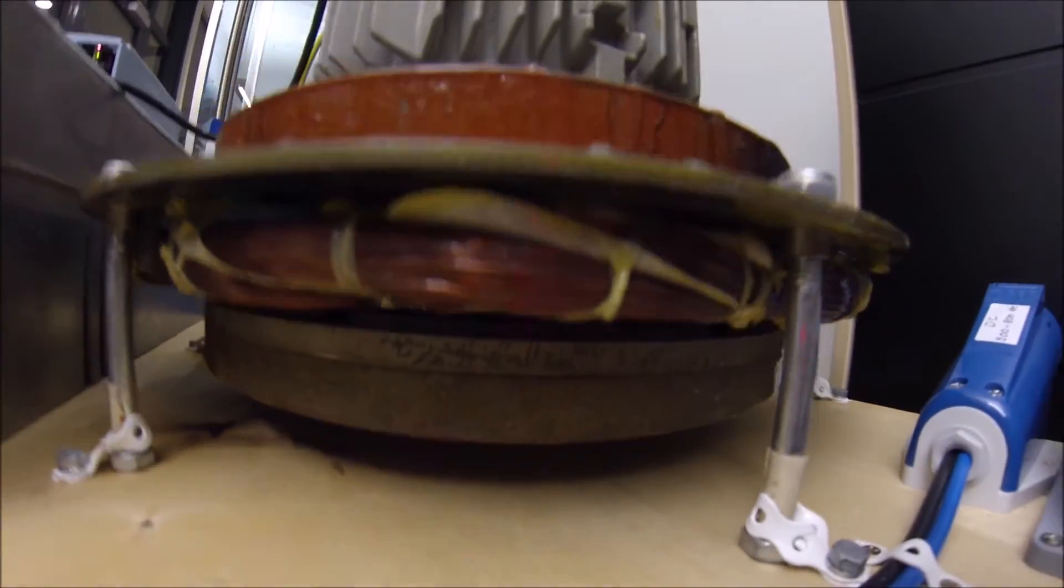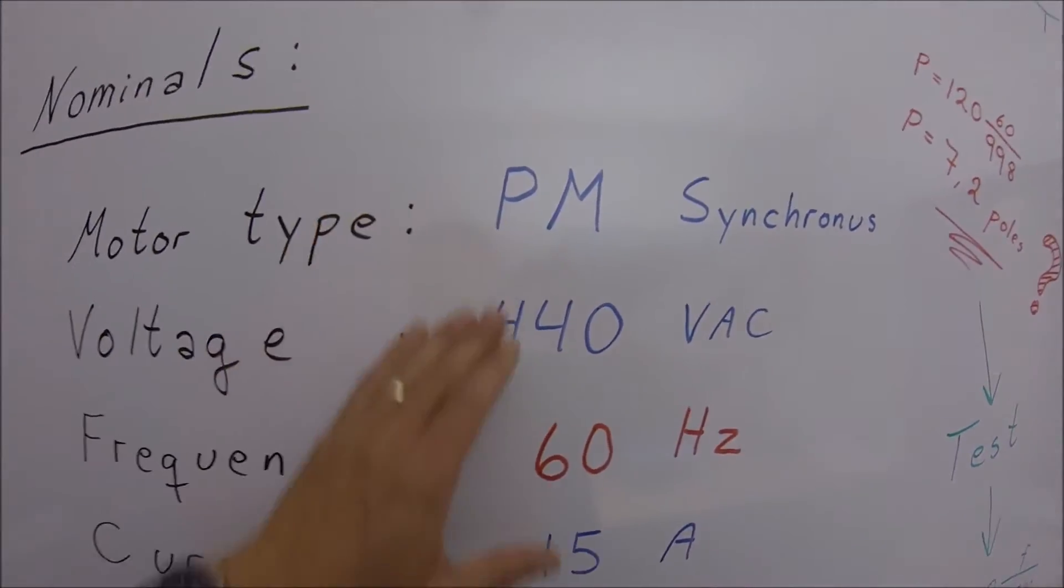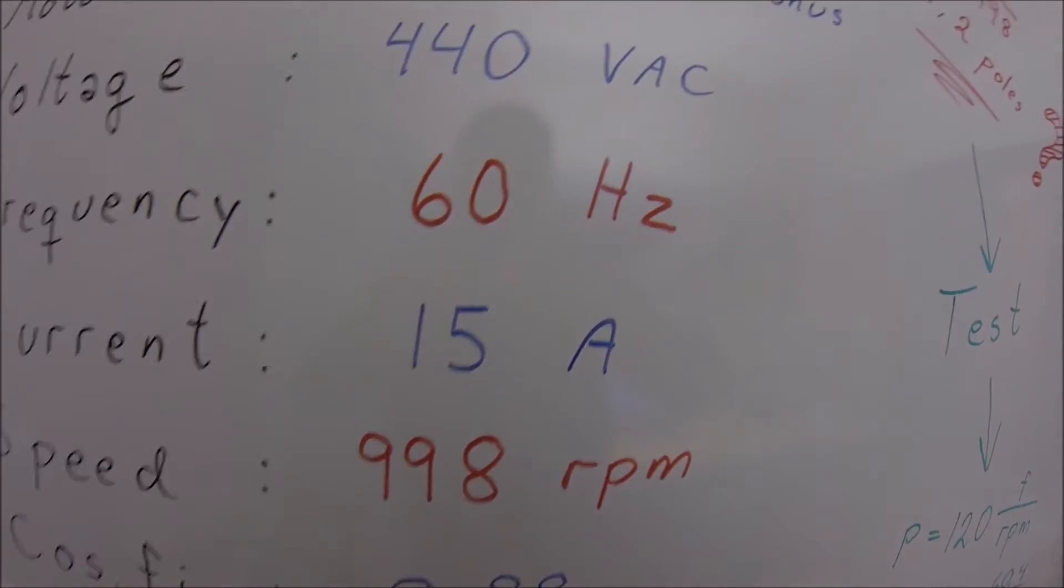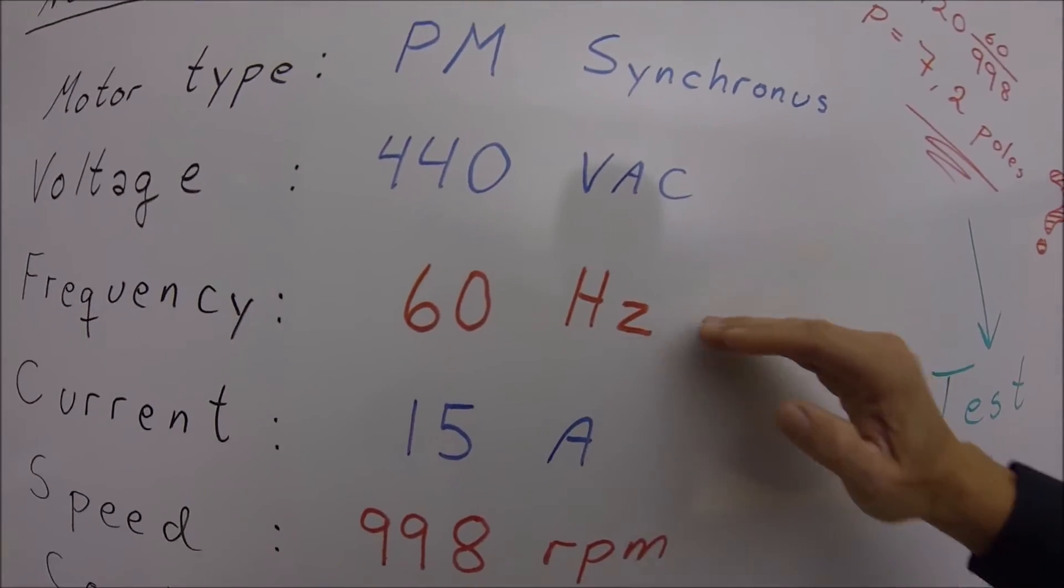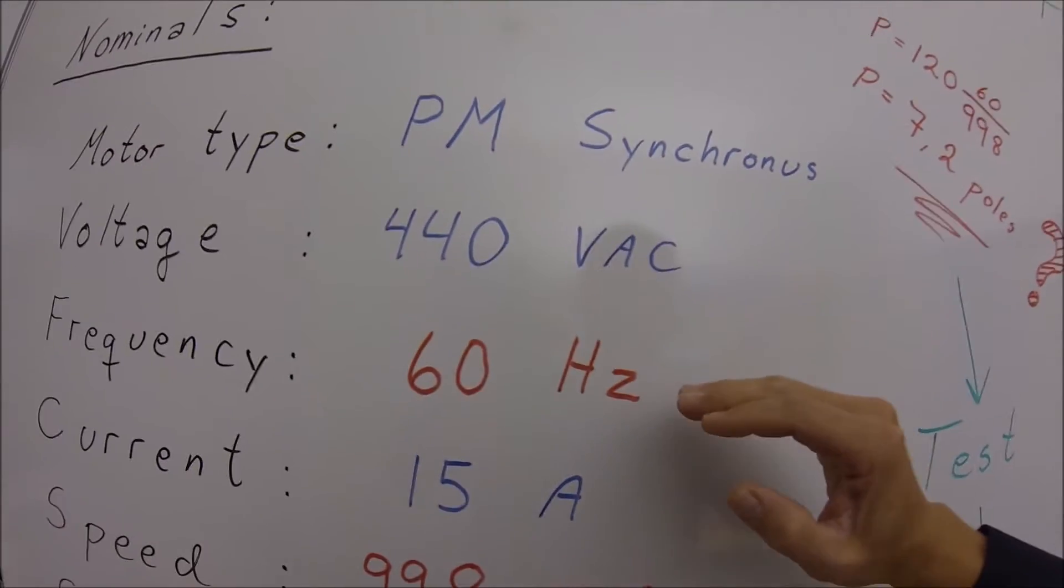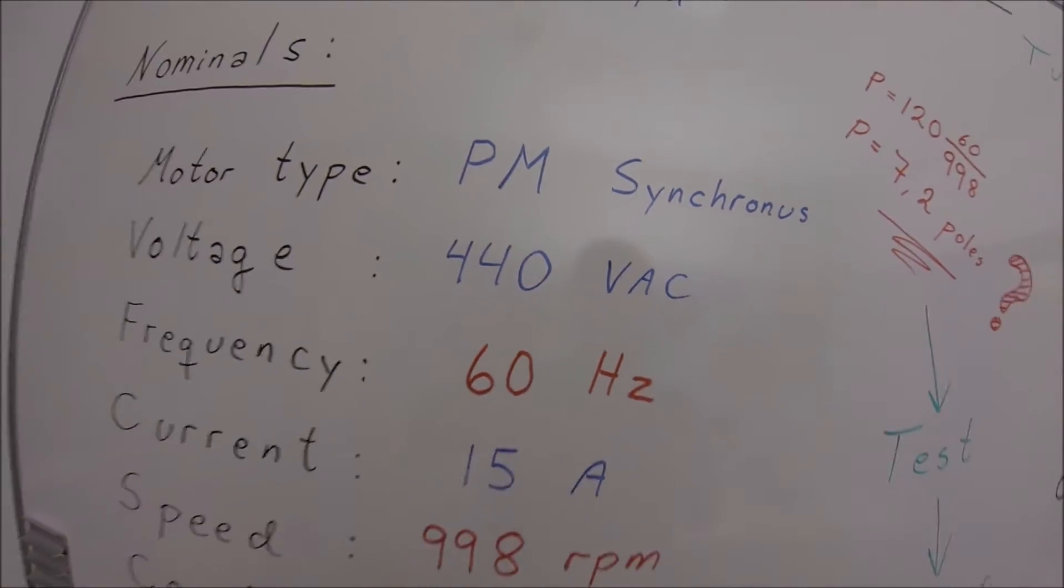To achieve a correct tuning we need to know the motor nominal data. The motor vendor have given me this data. Are they right? Are they precise enough? Especially the relation between the frequency and RPM is important, and also the relation between the frequency and the voltage, which is the BEM curve. Let's check.